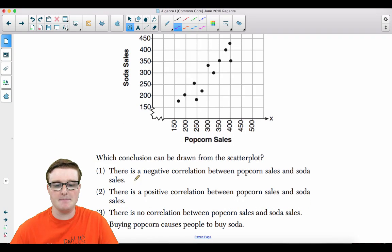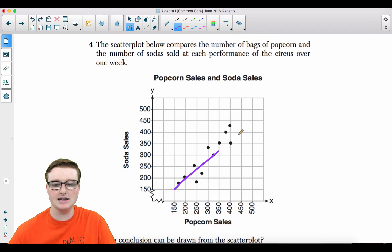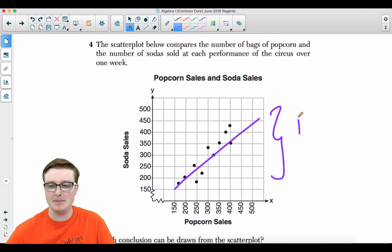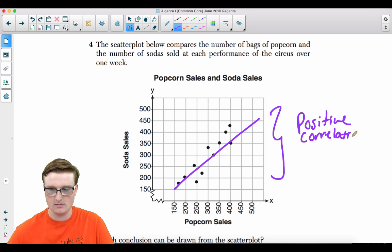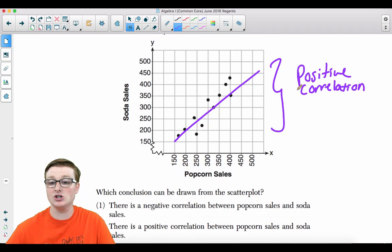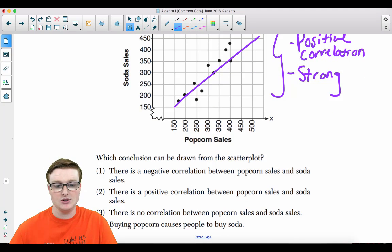First and foremost, we're looking at a negative, positive, no correlation or buying popcorn causes people to buy soda. This clearly is a positive correlation. It's a strong correlation because it is very close to, these dots are very close to the line of best fit. So it can't be negative. It's not that it's no correlation. There definitely is one.